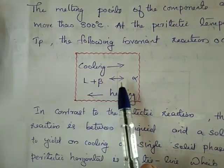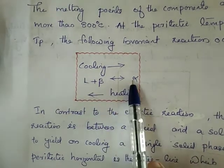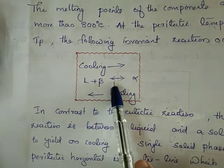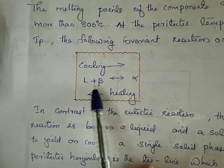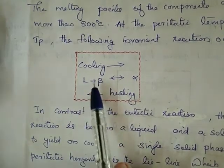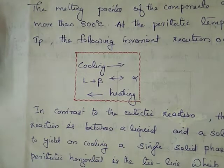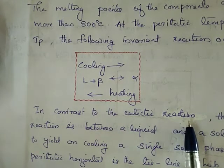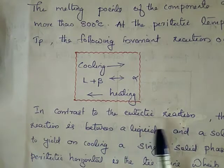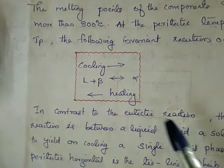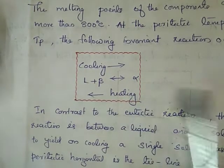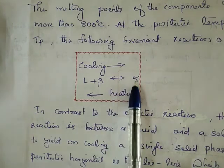On cooling, alpha is formed; on heating, alpha changes back to liquid plus beta. This is the peritectic reaction. In contrast to the eutectic reaction, the peritectic reaction is between a liquid and a solid phase to yield, on cooling, a single solid phase.